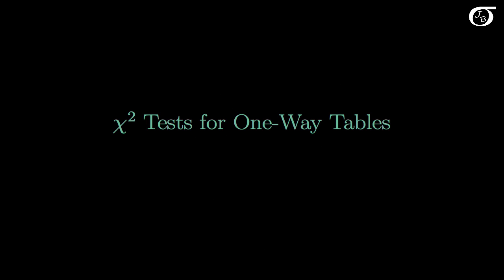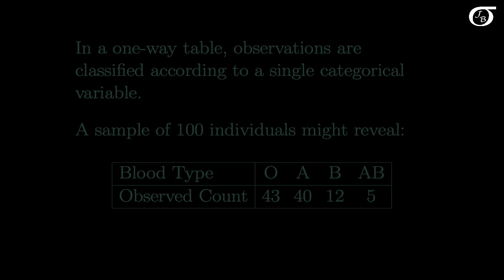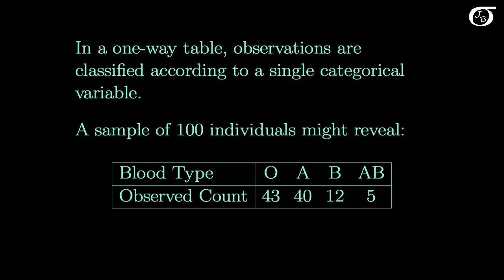Let's look at chi-square tests for one-way tables. In a one-way table, observations are classified according to a single categorical variable. For example, in a study of blood types, a sample of 100 individuals might reveal the following table.